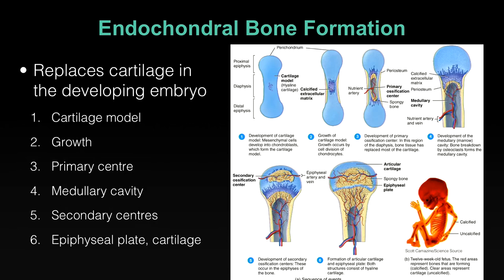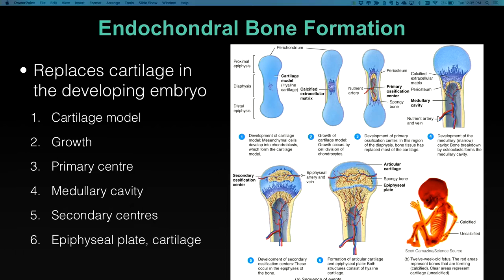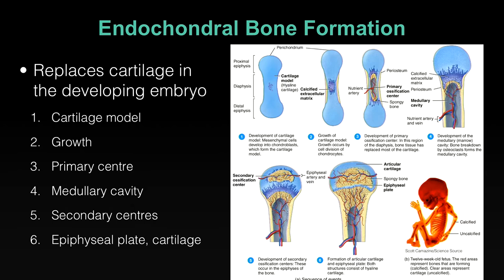Secondary ossification centers occur in the extremities — in the epiphyses — as the epiphyseal arteries perforate the hyaline cartilage in those areas. A similar process occurs: nutrient supply, forming bone in those regions, from the inside out with more extracellular matrix and calcification, until eventually the entire epiphysis is solid bone.